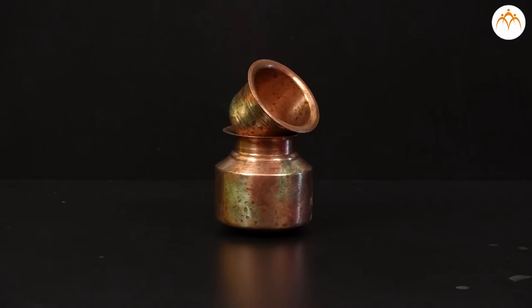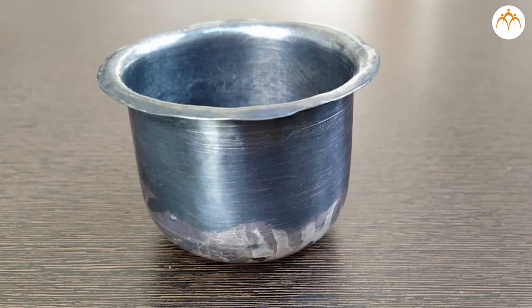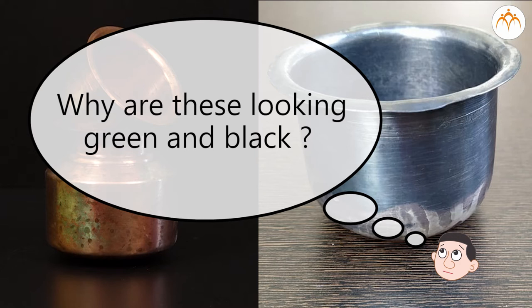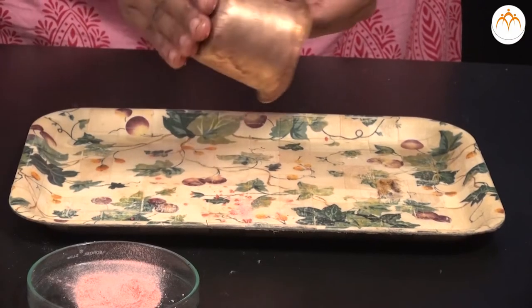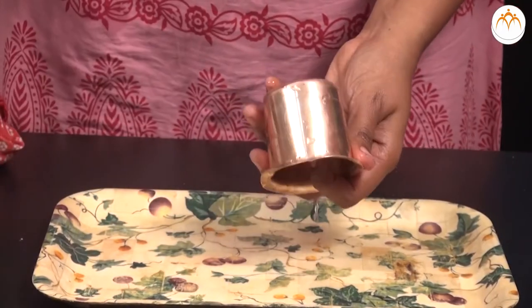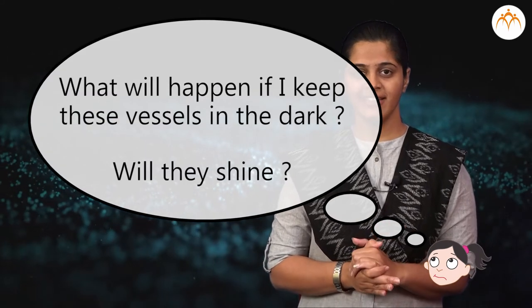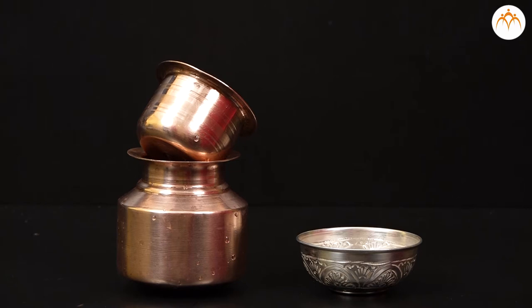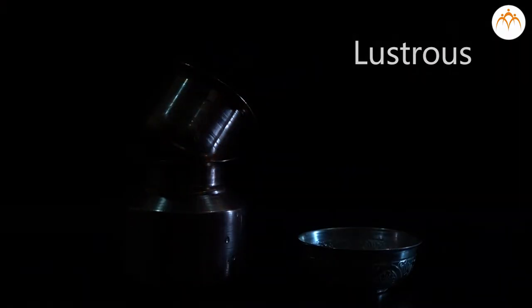Students, what do you see on the screen? These are copper and silver vessels. But why are these looking green and black? Let's try to clean them with lemon and tamarind and see what happens. Oh, they are looking so clean and shiny like new. What will happen if I keep these vessels in dark — will they shine? Because light gets reflected from the cleaned and freshly cut surface of metal when light falls on it, and the metal looks lustrous. In dark or in absence of light, there is nothing to reflect from the metal surface. Hence, even if the metal surface is clean, we cannot see the luster of the metal object.